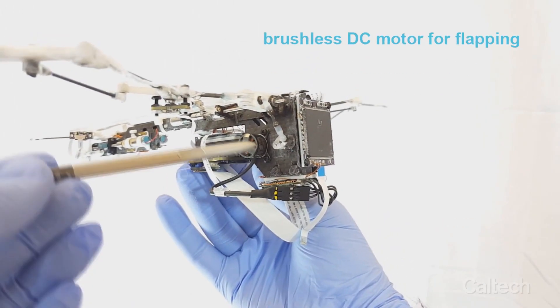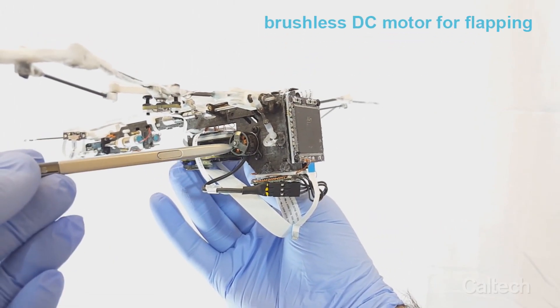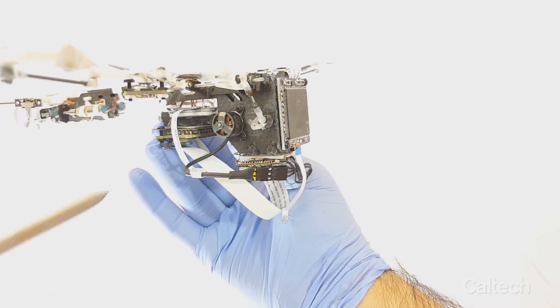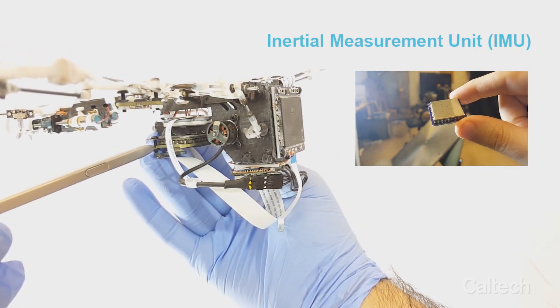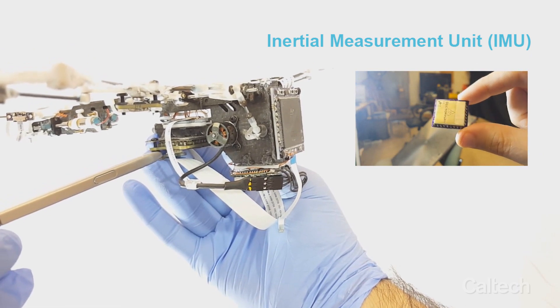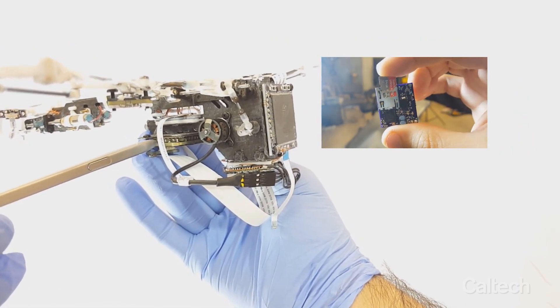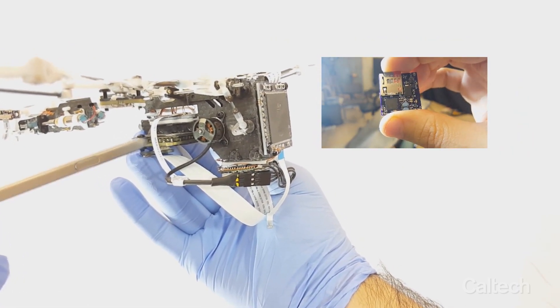The brushless DC motor drives a crankshaft mechanism. A sophisticated inertial measurement unit, or IMU, measures angular rate and acceleration. The data acquisition unit records sensor data and commands the micro actuators.